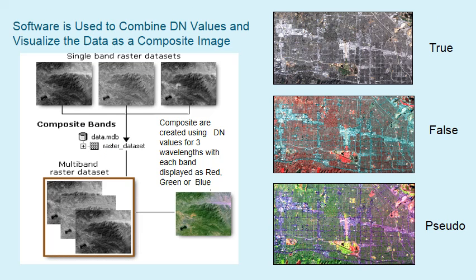Software is used to combine the digital number values for different wavelengths and visualize them as a composite image — an image with more than one wavelength being visualized. You need three wavelengths, displayed as red, green, and blue, and you can have different outputs as composites. These are three composited images: a true, a false, and a pseudo image. Each of the Landsat missions uses different wavelengths to produce these composites.